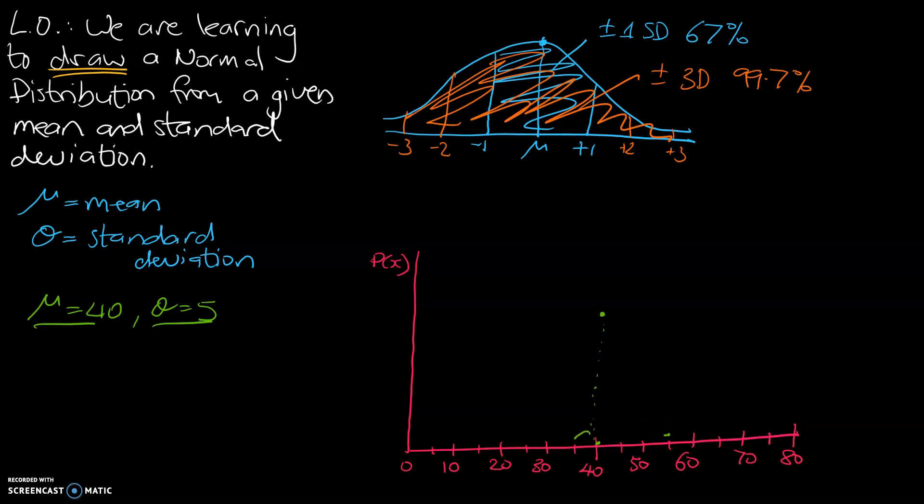And then after that, you've got minus 1, minus 2, and minus 3, which would come to 25. So what that means is our normal distribution curve should fit between those lines.